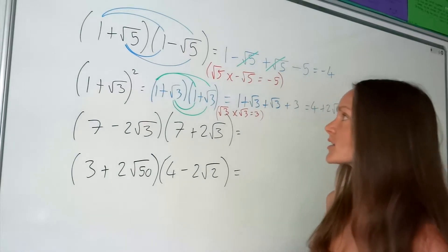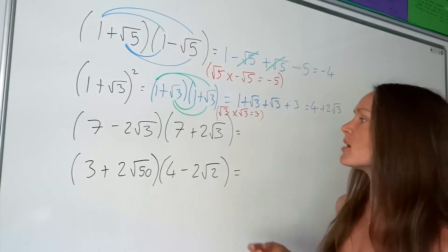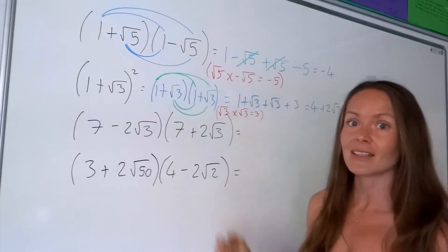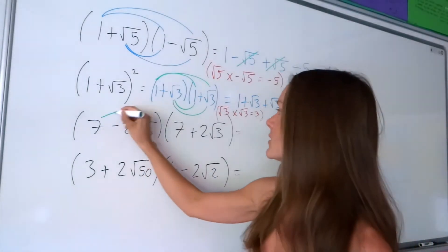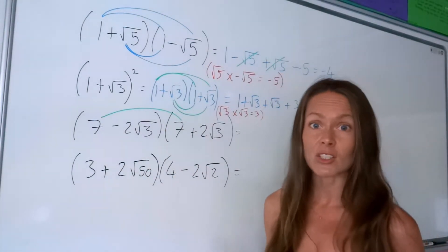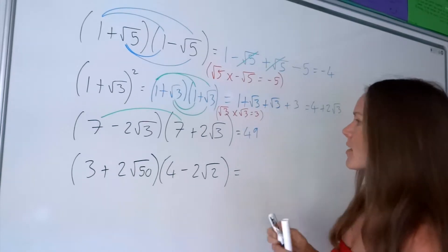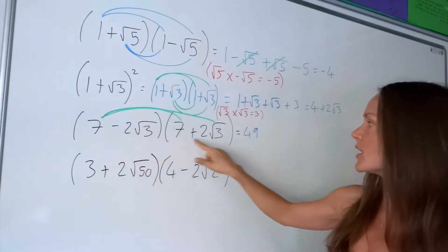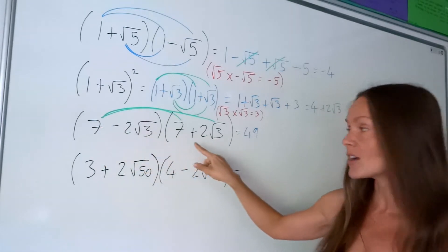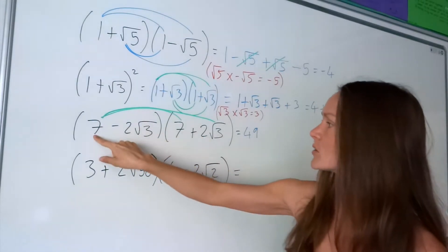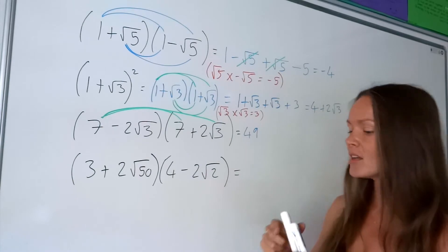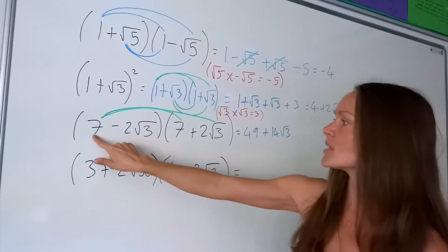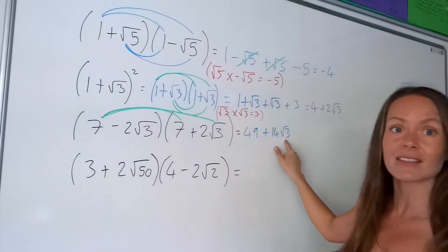On to the next one. It's exactly the same method, just a little bit harder because we've got a few extra numbers in there. Starting with the first two terms: 7 multiplied by 7 is just 49. Then these two: 7 multiplied by 2 root 3. The 7 multiplied by 2 gives me 14, so we're left with 14 root 3. You're just multiplying those two together and the root 3 just stays as it is.